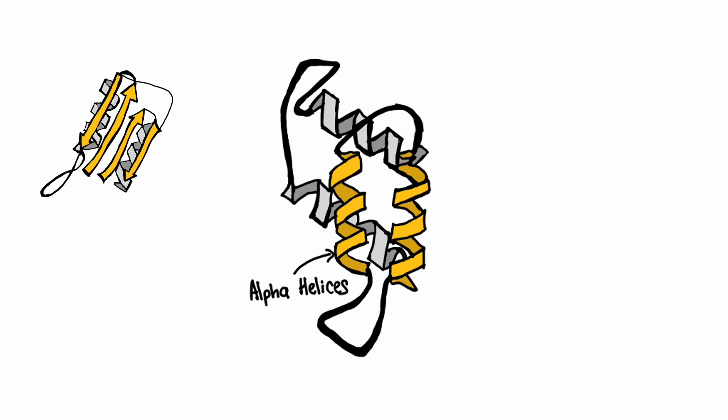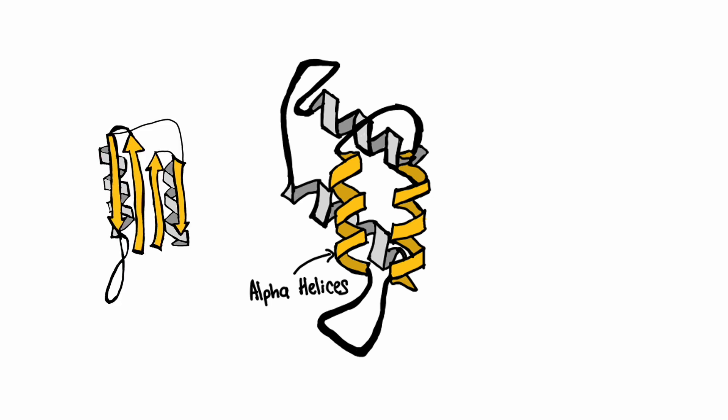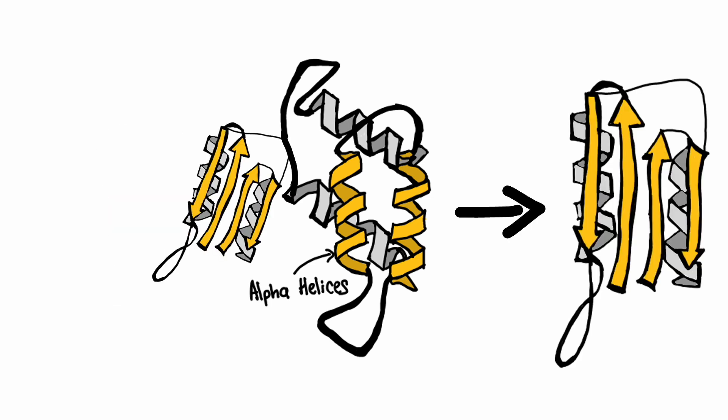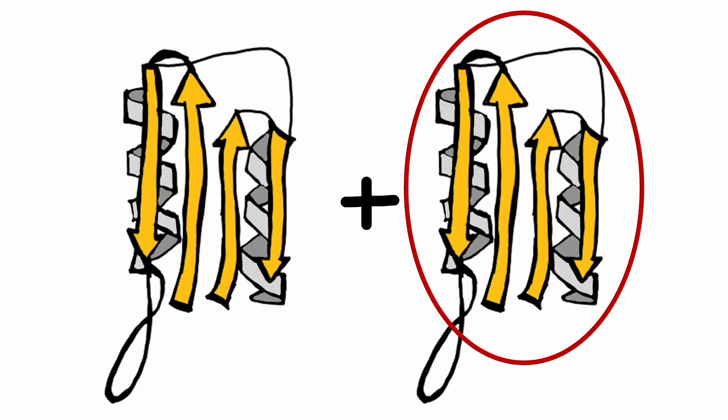The conversion occurs when the infectious form comes into contact with the harmless form, leading to a cascade of misfolding events. The resulting infectious molecule is highly stable and resistant to degradation.